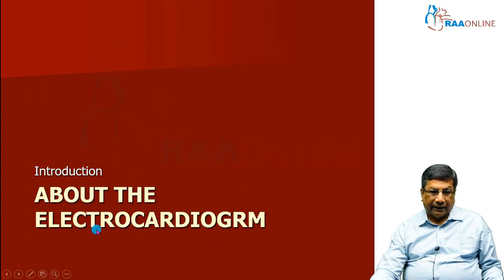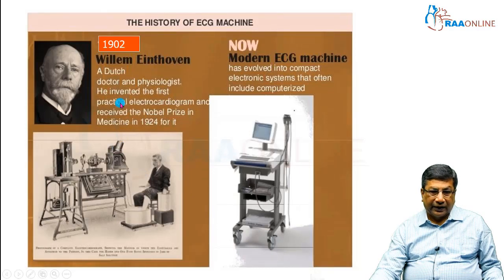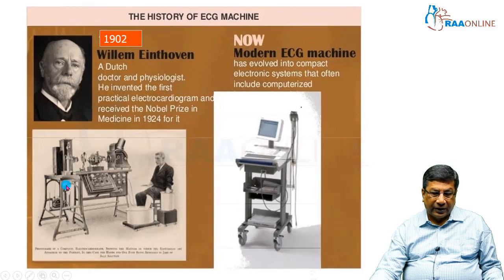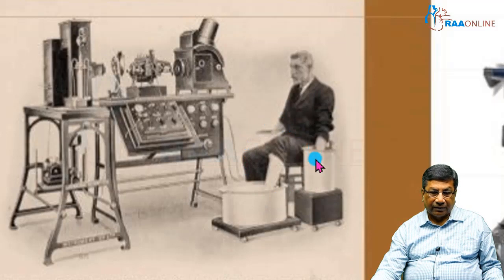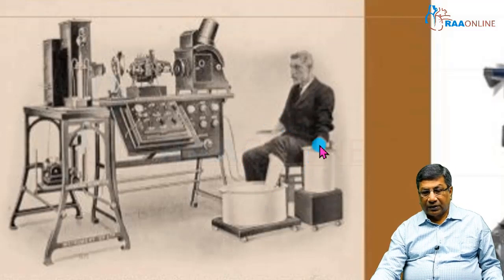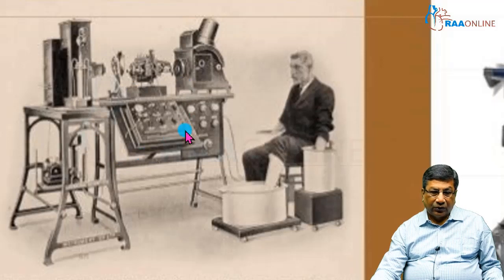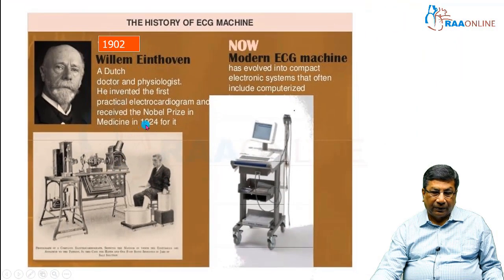We cannot begin a course on electrocardiogram without paying tribute to the wonderful Dutch scientist and doctor, Willem Einthoven, who gave us this wonderful investigation in 1902 through his big machine. This is the first ECG machine Einthoven devised. His poor assistant had to put his hands in a huge pot of saline, which served as electrodes in those days. It took two and a half hours to record an electrocardiogram, and two and a half days to interpret one. For this wonderful discovery, he received the Nobel Prize in 1924.